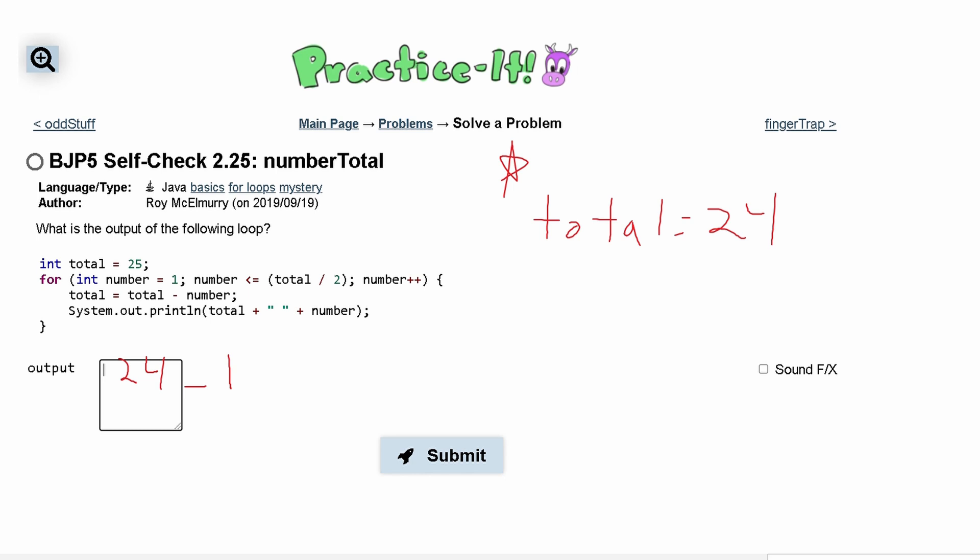So we have total equals our new total minus number. So our number is now 2, so total is going to equal 22 now, and we have 22 space and then number. Currently it is 2.